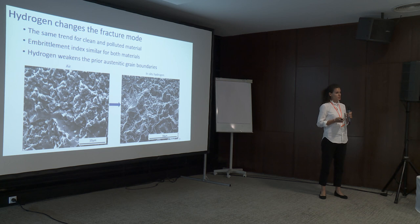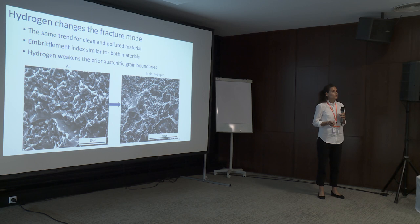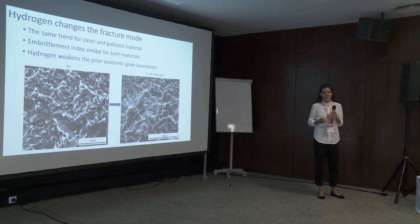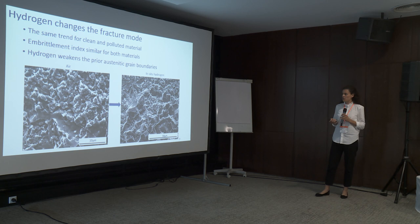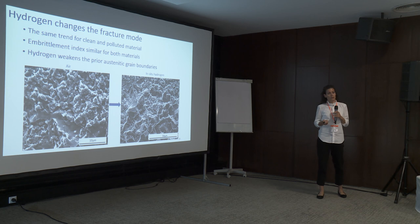Looking at the fracture surface of the sample tested without hydrogen, the weakest link in the material is the carbides. Although the fracture may appear dimple-like, the material is very hard and brittle with no plasticity, so no dimples are expected. Once hydrogen is introduced, we observe intergranular fracture with clear facets. The carbides remain important in the fracture mechanism, but hydrogen also introduces intergranular fracture, indicating that hydrogen is weakening the prior austenite grain boundaries.